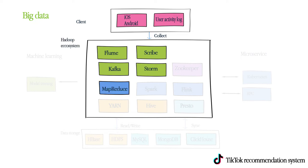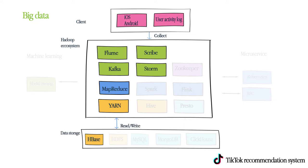This includes MapReduce, which processes data in parallel with batch processing. YARN is a framework for cluster resource management. HBase is a distributed database. HDFS is a distributed file system. Hive is a data warehouse infrastructure, and Zookeeper is a high-performance coordination service.